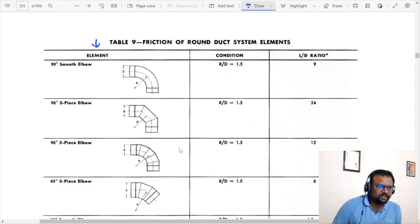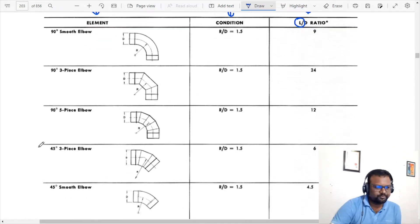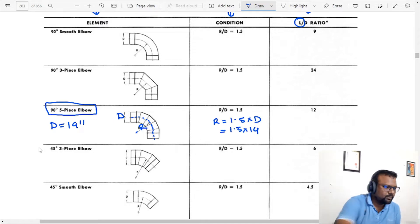Here we have elements, conditions, and L/D ratio. This L is equivalent length. We need to construct the duct. Common construction is 5 piece elbow. The L/D ratio is 1.5. So the L/D ratio is 1.5 into 14. It is basically the construction curve.